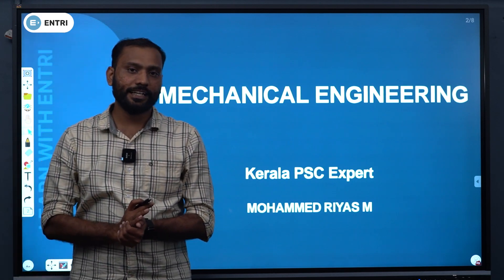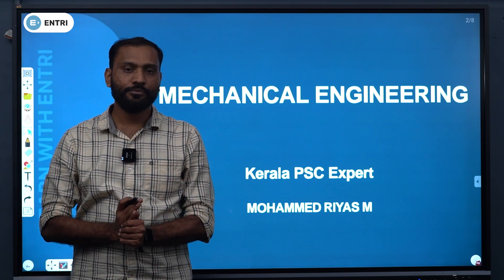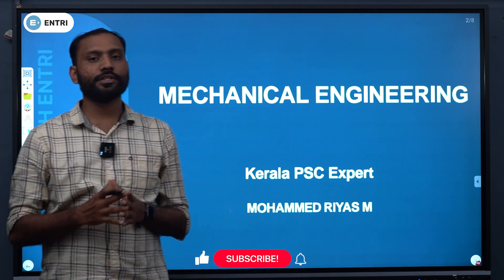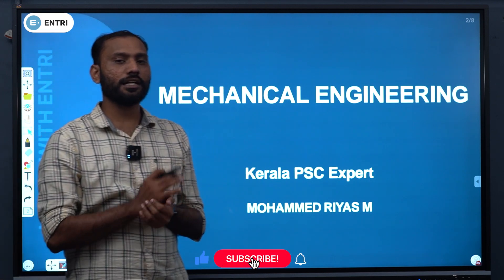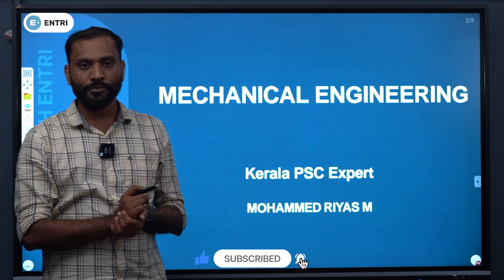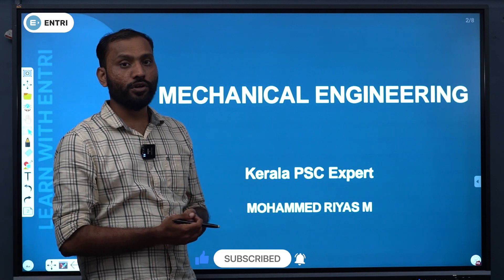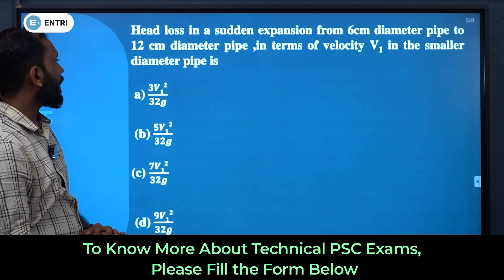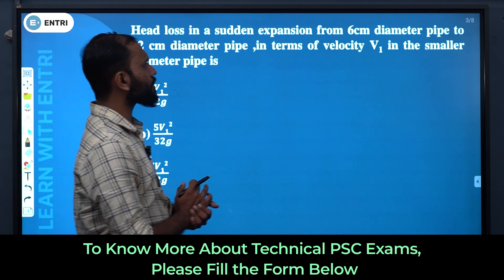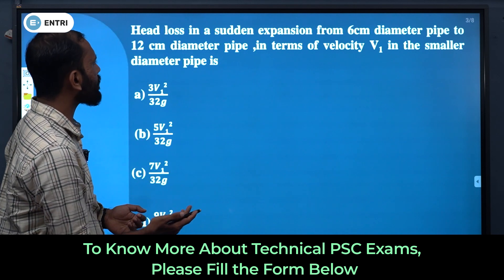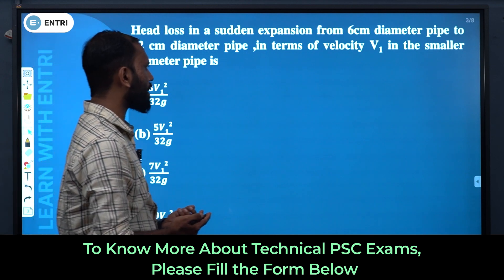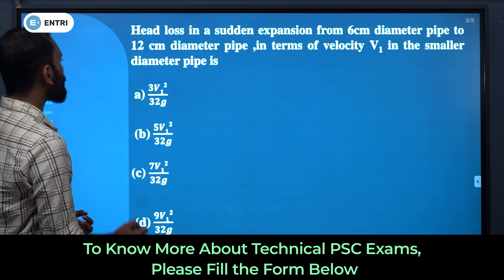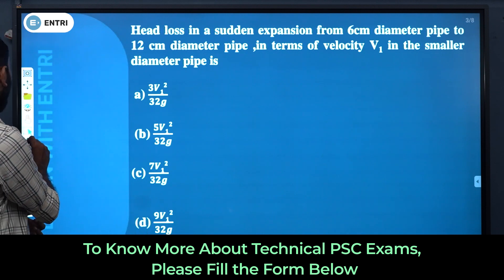Hi, welcome all to Entry Technical YouTube channel. In this video session, we will discuss fluid mechanics and hydraulic machines — important questions we will discuss. So, once again, I welcome you all to the session. First question: head loss in sudden expansion from a 6 cm diameter pipe to 12 cm diameter pipe, in terms of velocity V1 in the smaller diameter pipe, is?